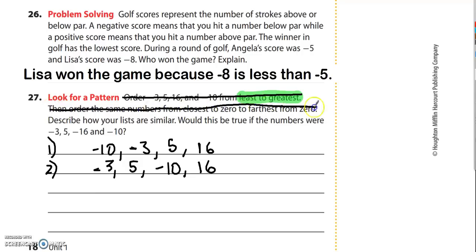Now the third thing is to compare. It says describe how your lists are similar and would this be true if the numbers were, and then it changes the numbers a little bit. So I've got my third task here. It says describe how they're similar. Really the only thing they have in common would be is that 16 is the last number listed in both cases.